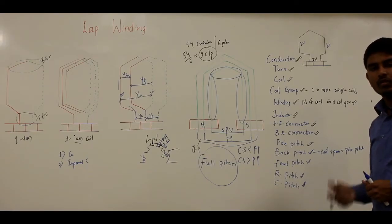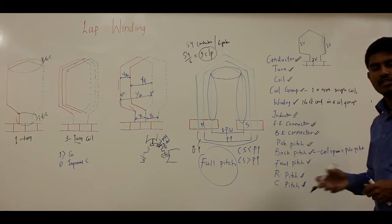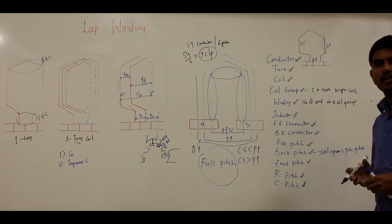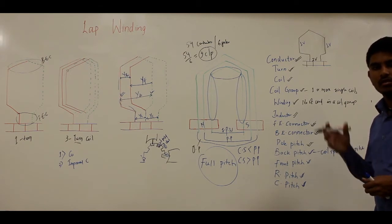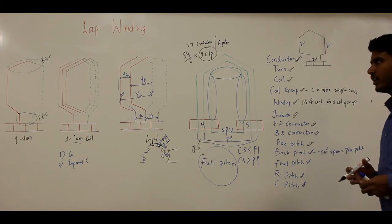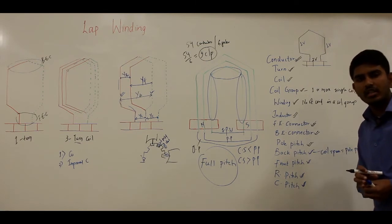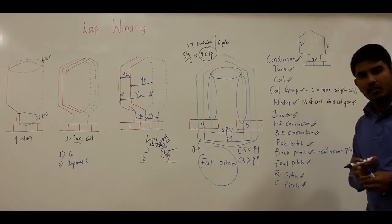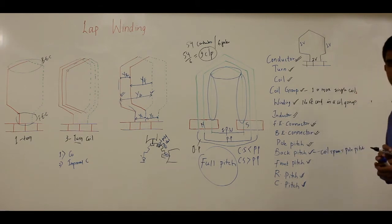Armature windings are always of the non-salient pole type. Basically there are two types of rotor: the salient pole type and the non-salient pole type. In the salient pole type, you have projected poles, while in the non-salient type you have a cylindrical shape with parallel slots. Armature windings, being of non-salient pole type, are symmetrically distributed around the circumference of the armature. According to the degree of closure, armature windings are of two types.